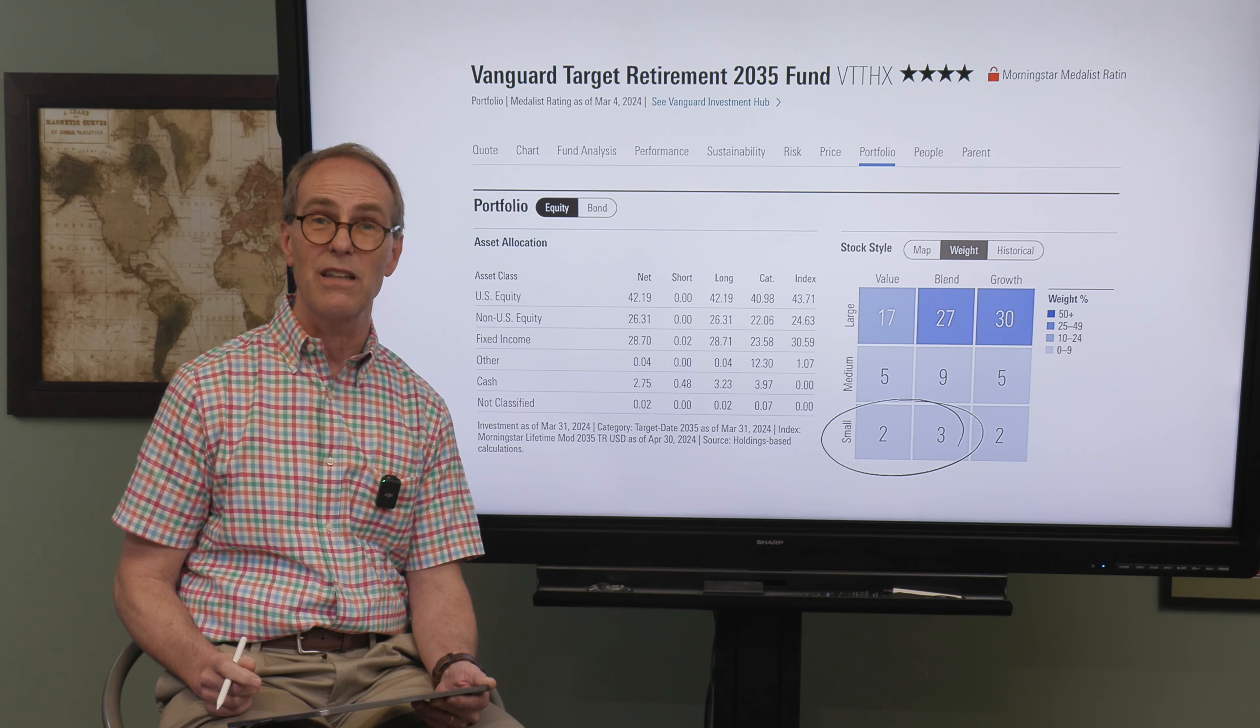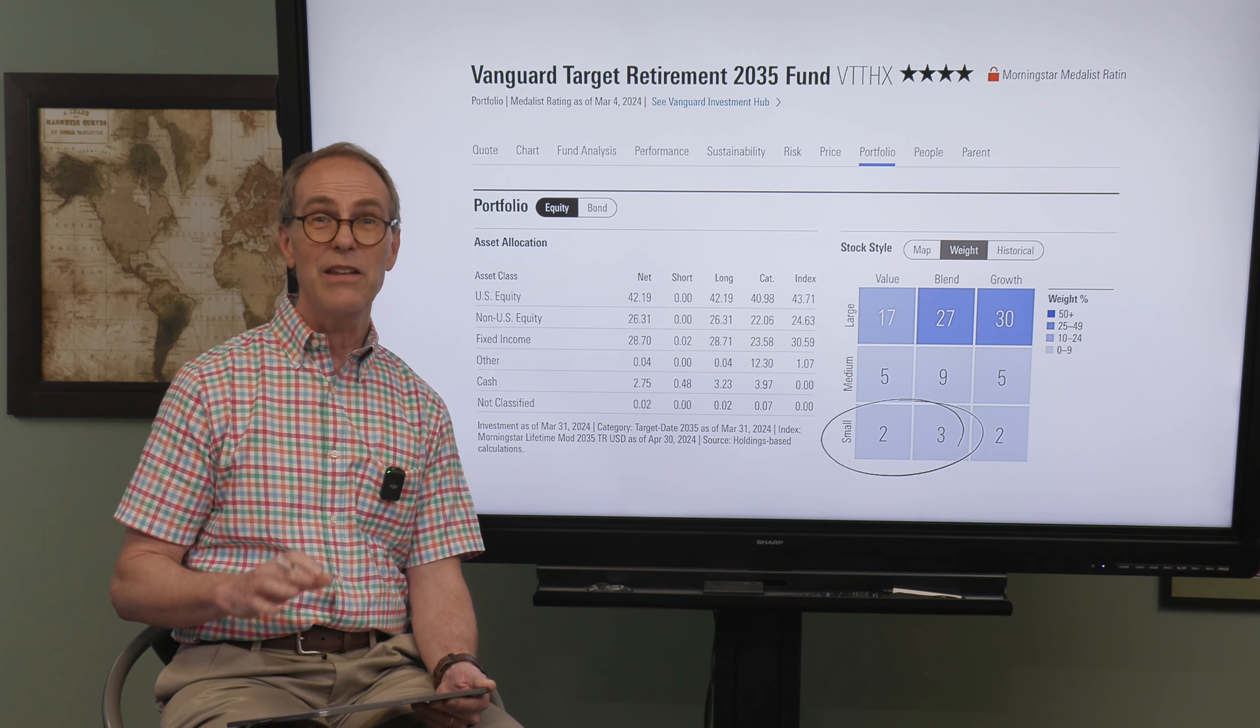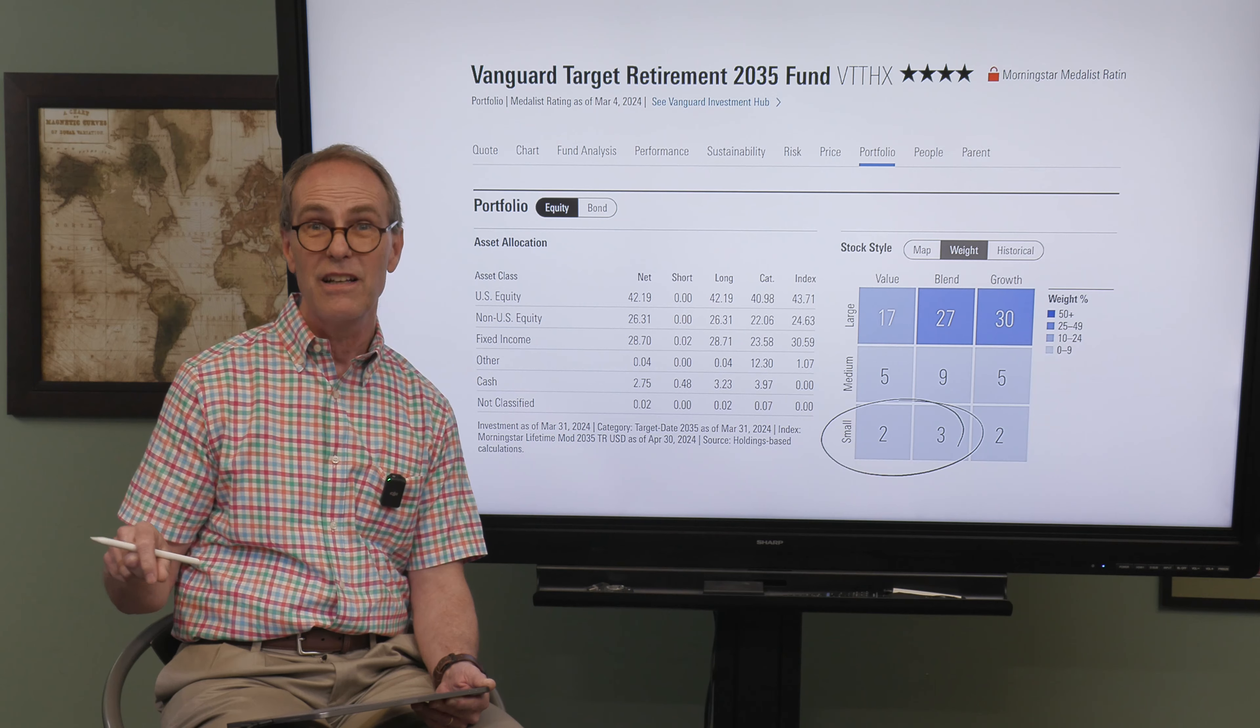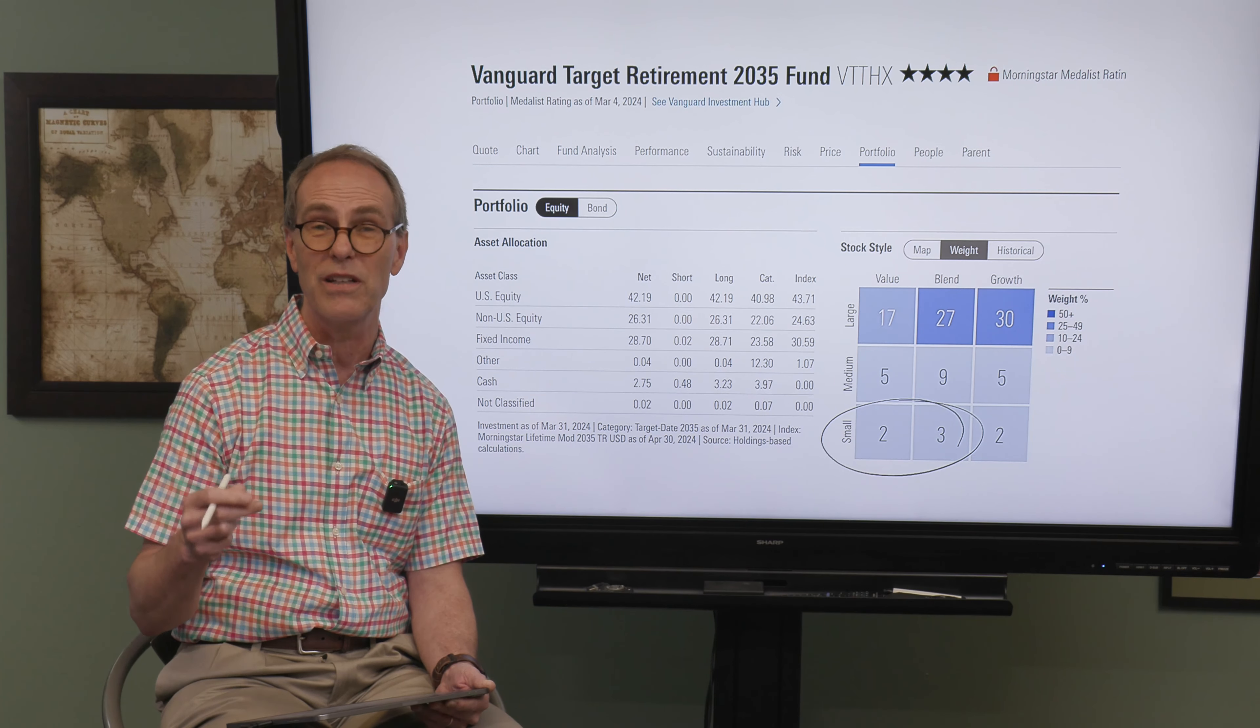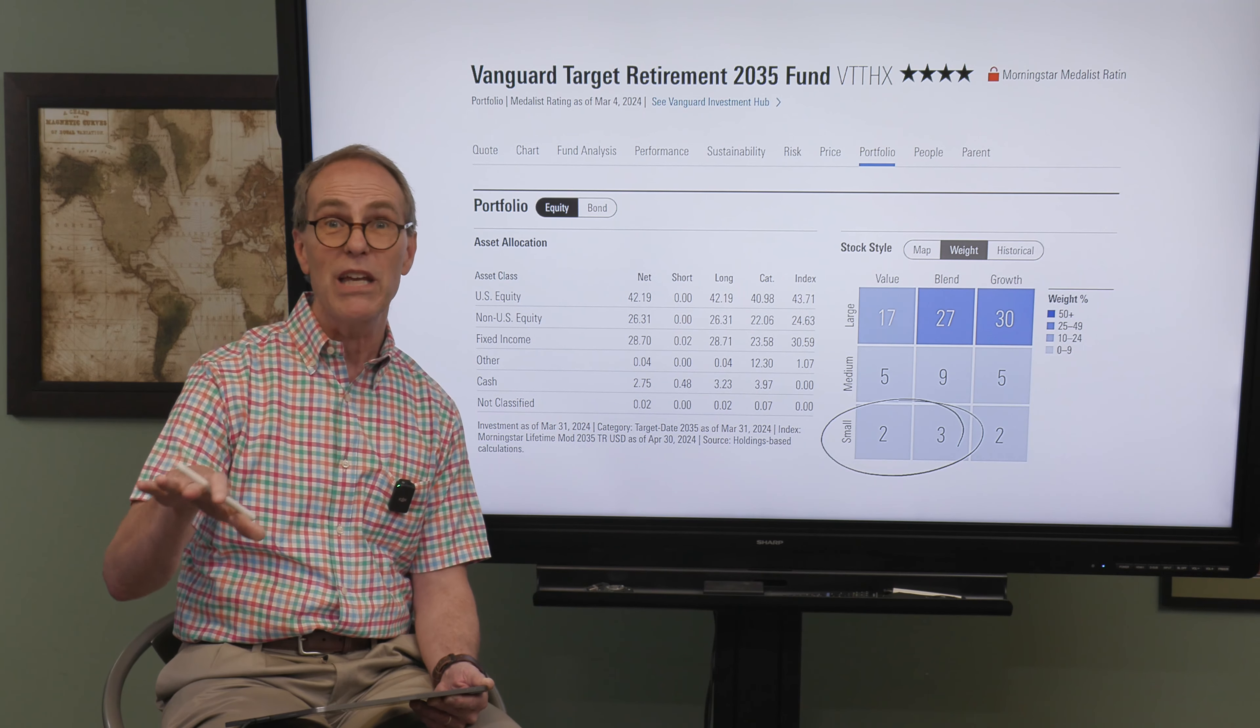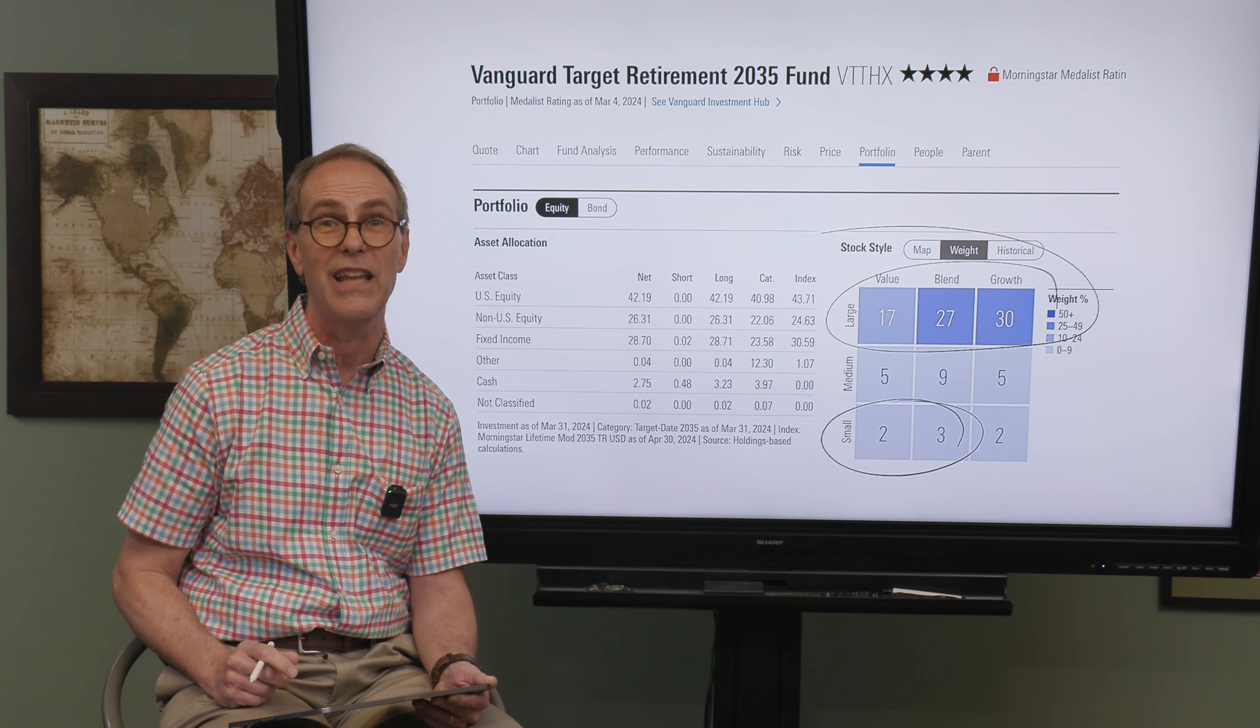Now in the 401k world they know what I'm telling you, and they have something called 404c, and that is basically a regulation or a ruling stating that if they give you a lot of other mutual funds to invest in - they give you small company funds and value funds and international value funds and so on and so forth - you can't come back at them later and say you didn't give me enough diversification, you didn't give me enough choices. You can't come back at them if all of a sudden what I say actually comes to fruition, where most of your money is in this area and that area goes for a long period of time with no return.